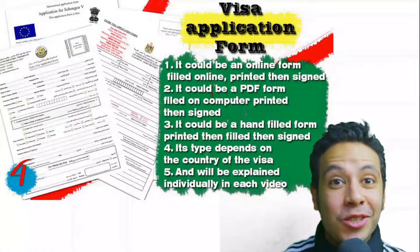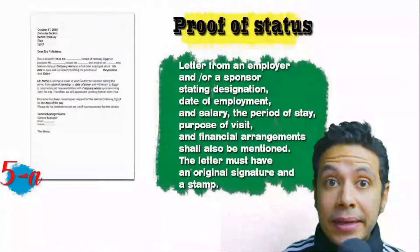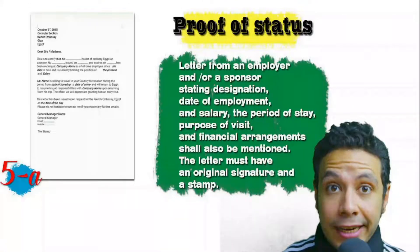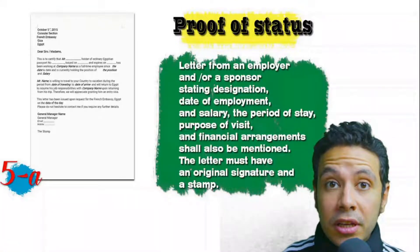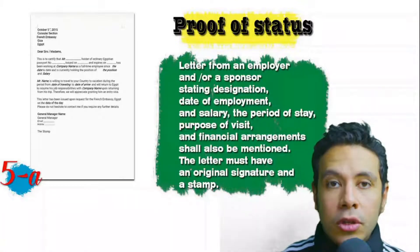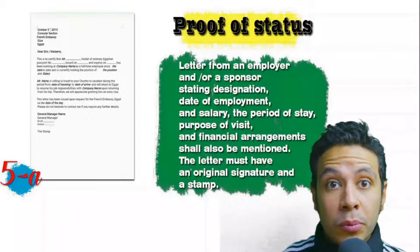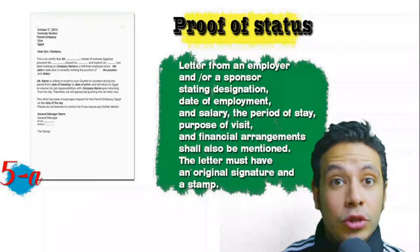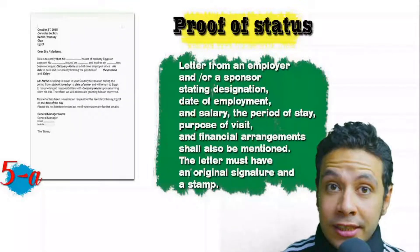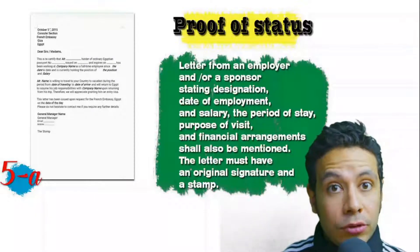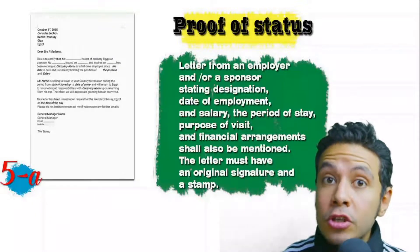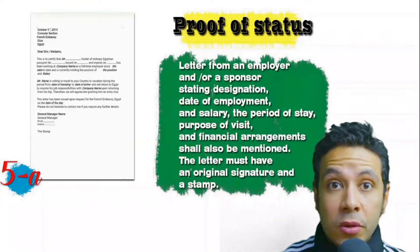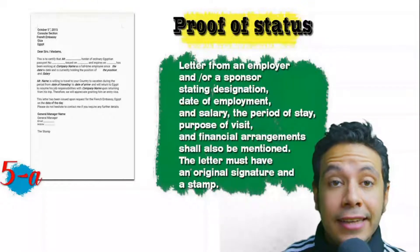In most visa application processes you will be required to provide a proof of status. For example, if you are an employee, you will have to provide a letter from your employer or HR department mentioning your name, work details, and salary. Both address and contact numbers should be mentioned in that letter, and all letters must have an original signature and stamp.